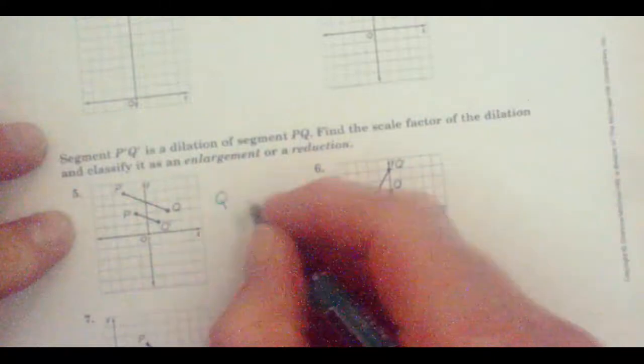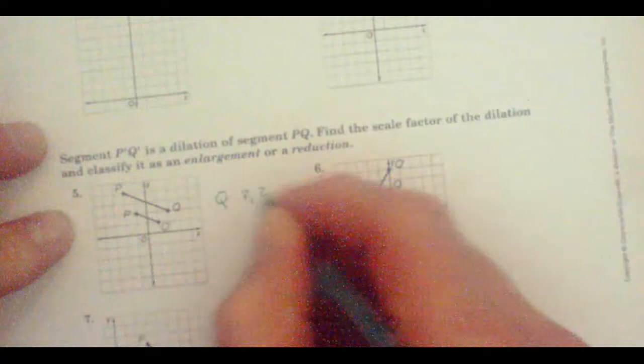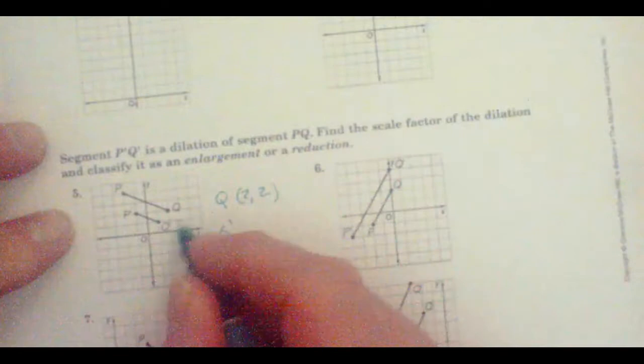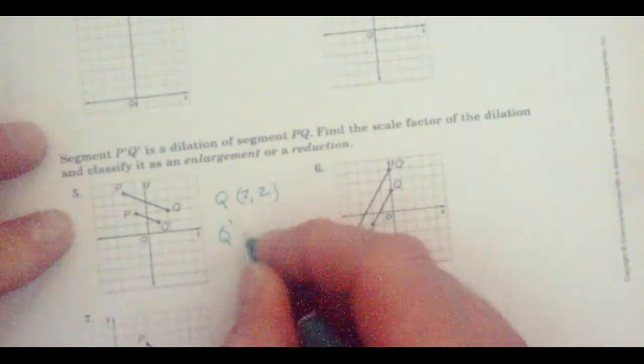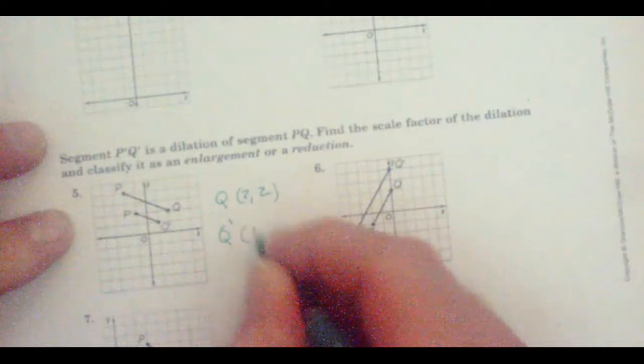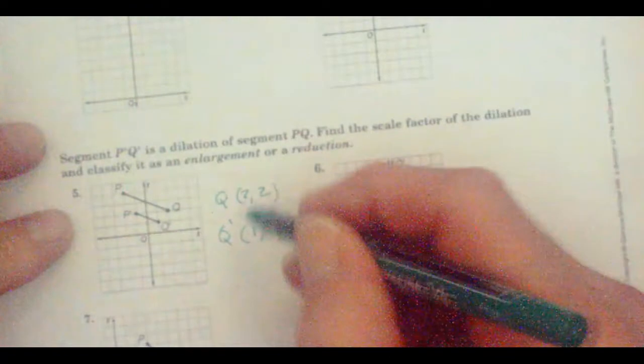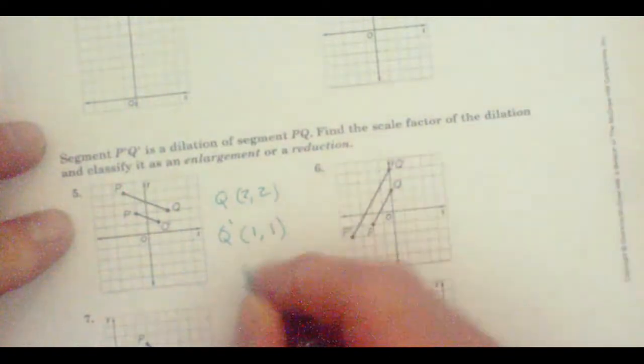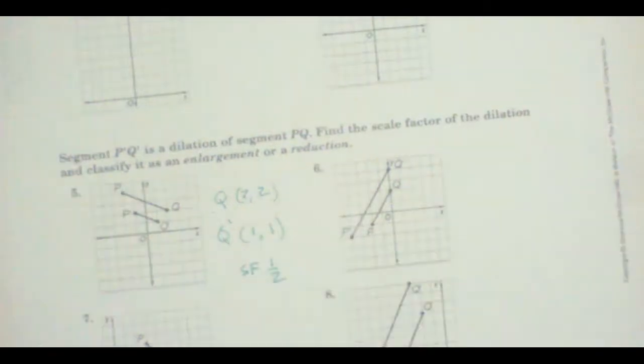The coordinates for Q were 2, 2. For Q prime, you can barely see the prime mark, but you can see it there, they had 1, 1. So how do we get from 2 to 1? Well, the scale factor is 1 half, whatever you multiply it by. So we can check P2.